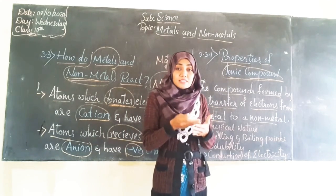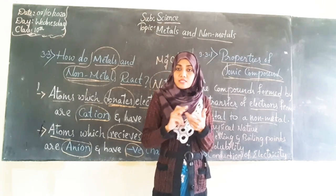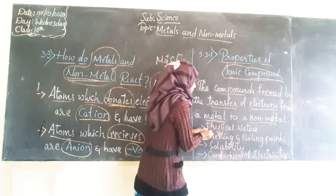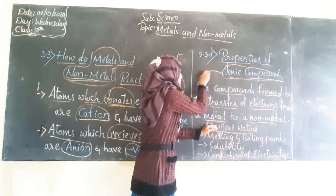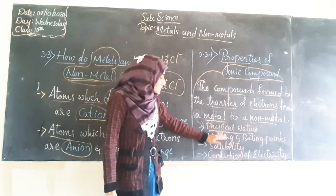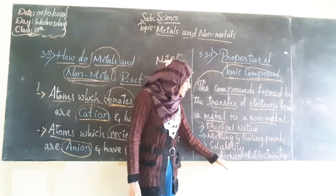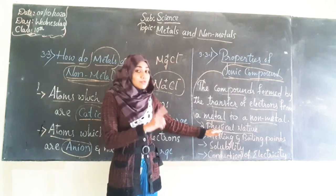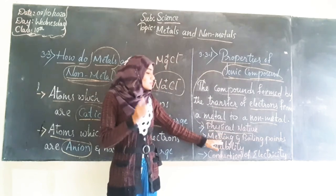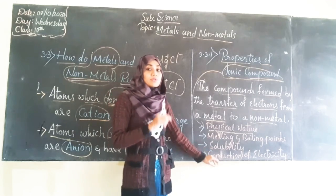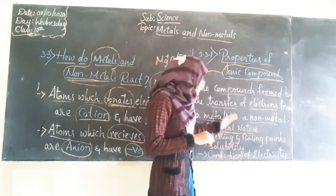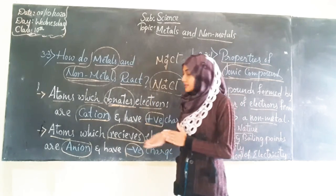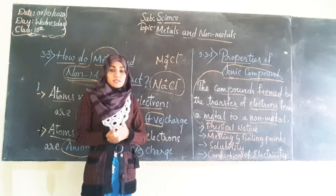Like how we went through the properties of metals and non-metals, ionic compounds also have their own certain properties. They have a distinct physical nature, different melting and boiling points, solubility, and conduction of electricity. We will discuss in detail about these four properties of ionic compounds through this video.